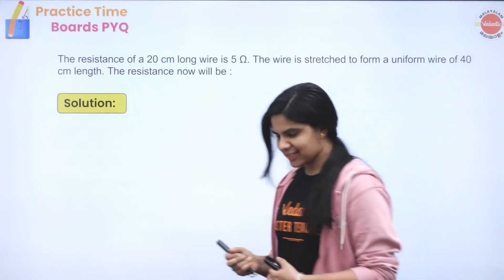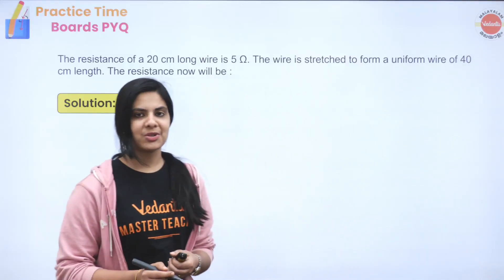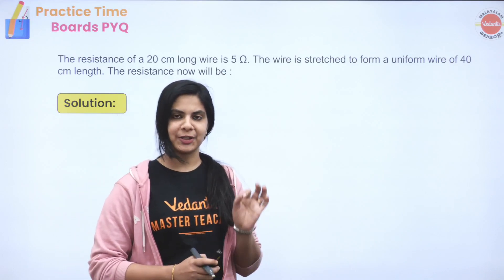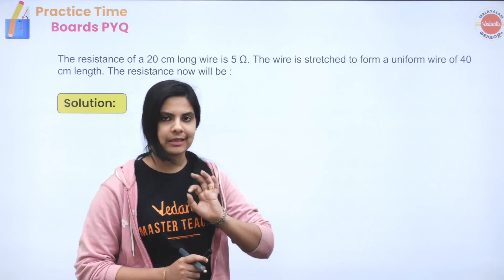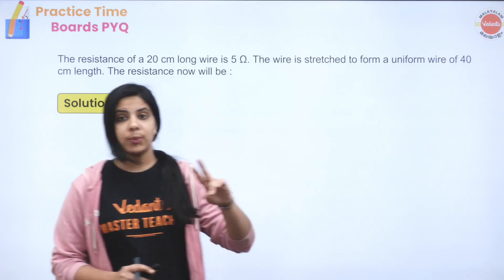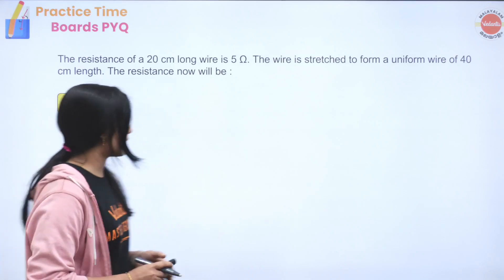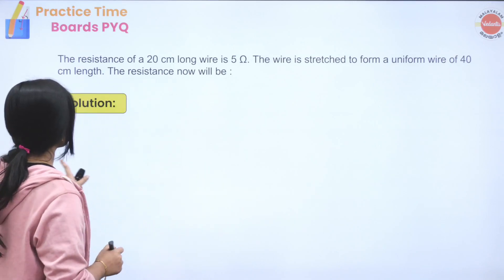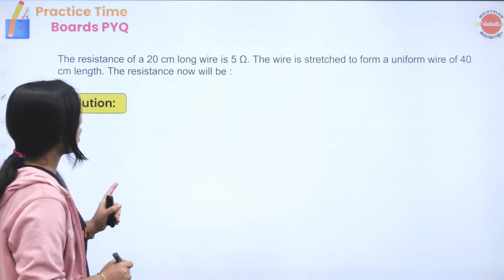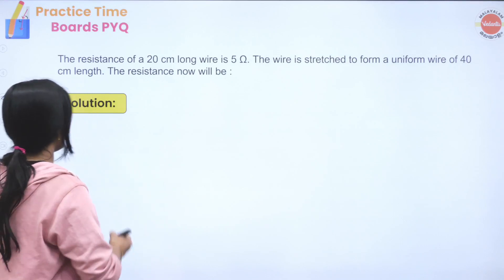Hello, my dear physics warriors, welcome to Vedantum Malayalam channel. We are going to talk about current electricity. The first question is: the resistance of a 20 cm long wire is 5 ohm.